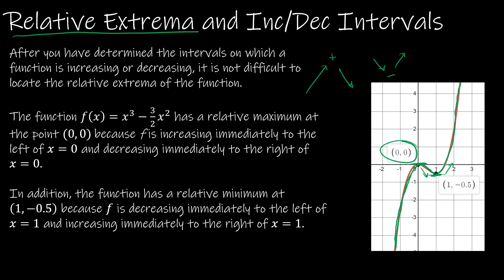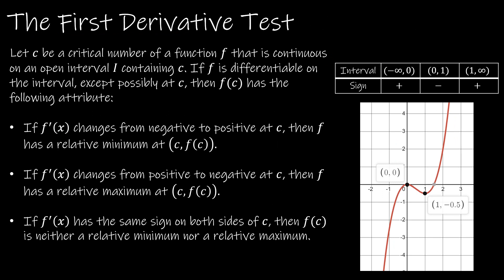There's a relative max at the point (0, 0) because f is increasing to the left and decreasing right after that, and a relative min at 1 because it's decreasing to the left and increasing to the right. The first derivative test tells us: find the critical numbers on the open interval, then find all intervals where f(x) is increasing and decreasing. If f′(x) changes from negative to positive, there's a relative minimum. If f′(x) changes from positive to negative, there's a relative maximum. If the sign is the same on both sides, it's neither.